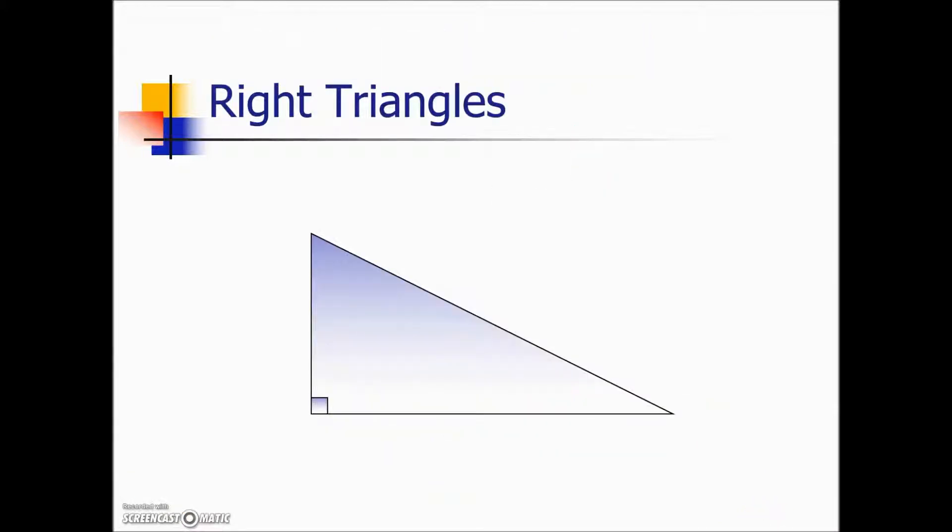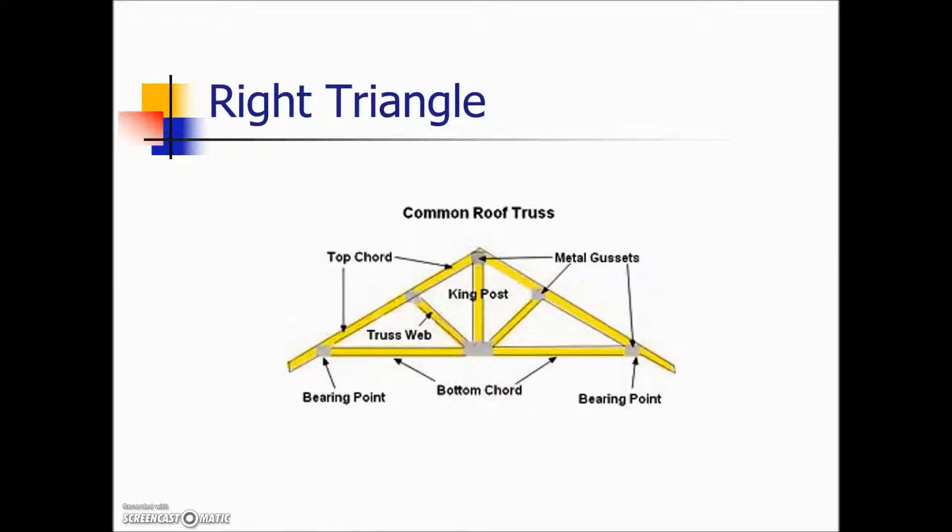Right triangles have by definition a 90 degree angle and the side located directly opposite that right angle is called the hypotenuse. It is the longest side in a right triangle. The two sides that make up the right angle are called legs. And again, we have right triangle applications in multitudes of places. Here the kingpin is forming our right angle combined into a triangle.